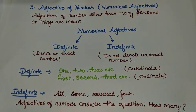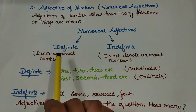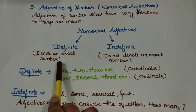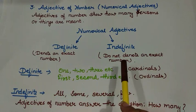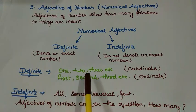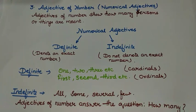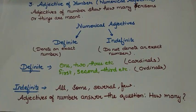Number three is adjective of number. Adjectives of number show how many persons or things — we are talking about the number. Adjectives of number are further subdivided into definite and indefinite. In definite numerical adjectives we denote an exact number, but in indefinite numerical adjectives we do not denote an exact number. In definite numerical adjectives, words like 1, 2, 3 or 1st, 2nd, 3rd are there. The words 1, 2, 3 are called cardinals and 1st, 2nd, 3rd are called ordinals. Indefinite numerical adjectives do not denote an exact number — words like all, some, several, and few are used.